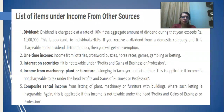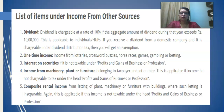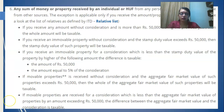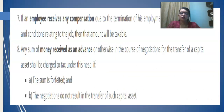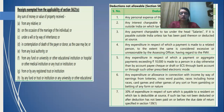Let us look at the list of income from other source. First is dividend. Then one-time income such as winning from horse race. Any compensation received due to termination, any money received as an advance, etc. — all these are characterized under income from other source.